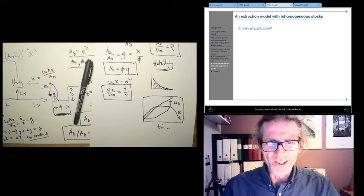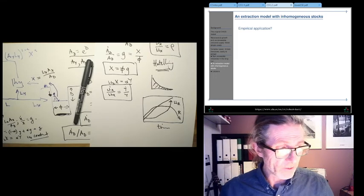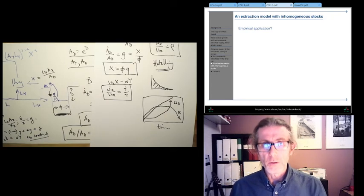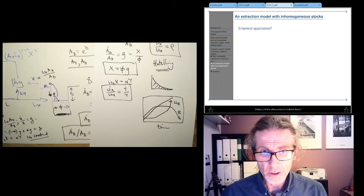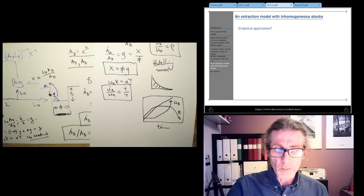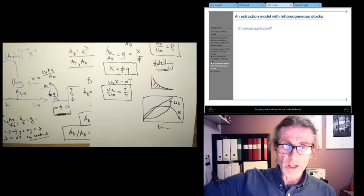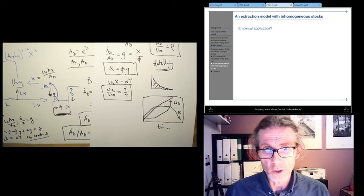Okay, so final video I think, unless it takes too long on resource extraction. Remember we started off with this limits to growth model, and it just said according to that model we're just going to race to the cliff and then fall over the edge of it and collapse.